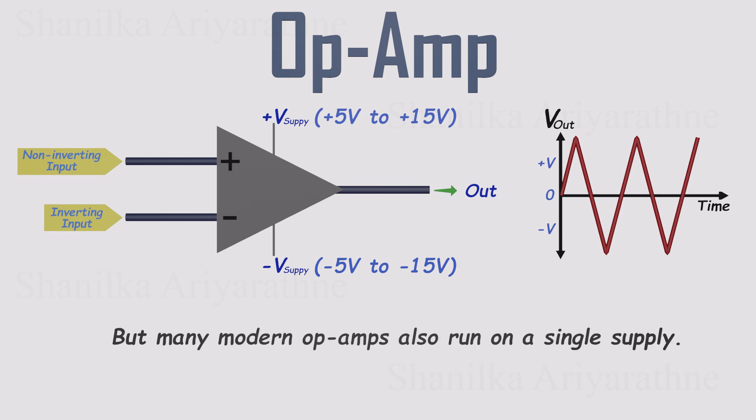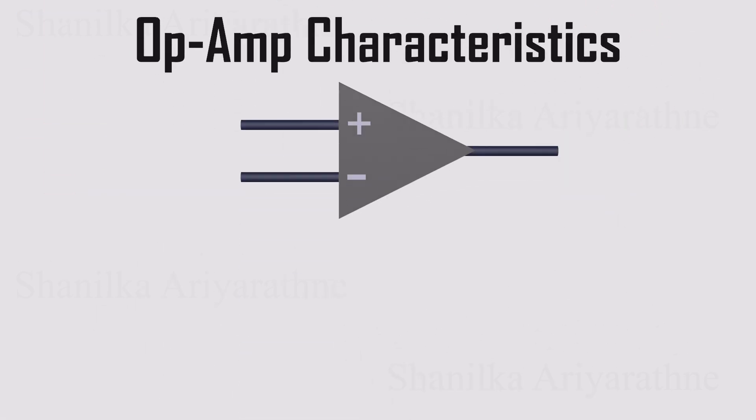But many modern op-amp chips are designed to work on single-rail supplies, too. In that case, you only need a regular positive voltage source, just like the ones used in most everyday circuits. There are a few key things to keep in mind when working with op-amps.